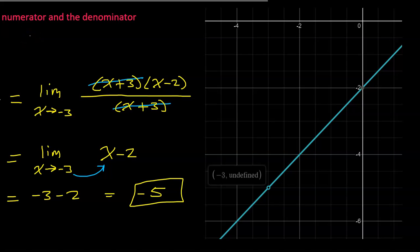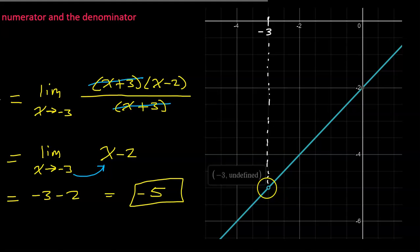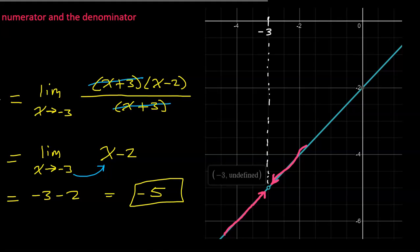Let's take a quick look at the graph before moving on. The graph is a line with a hole at an x value of negative 3. We've learned that it doesn't matter that the function is undefined at the value x is approaching. What matters is: as the x values approach negative 3 from the left and from the right, what are the y values approaching? We can see the y values are approaching negative 5, which is exactly what we got.